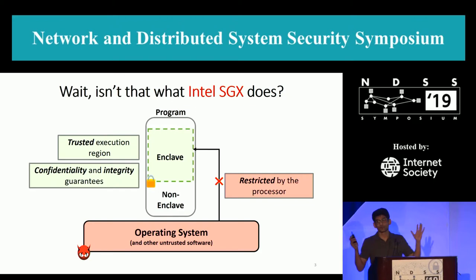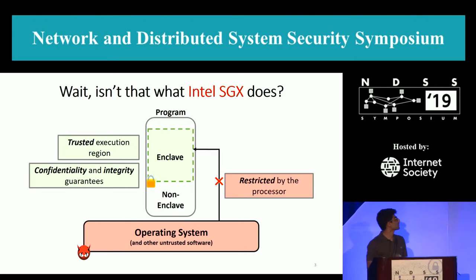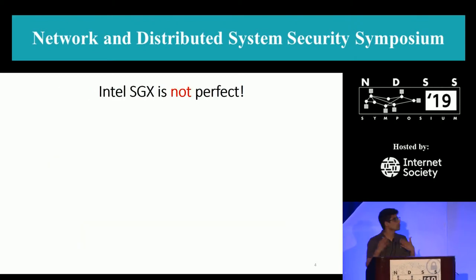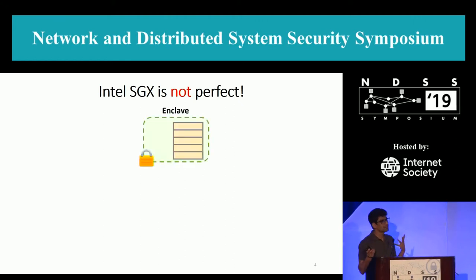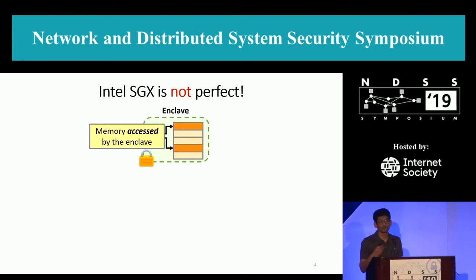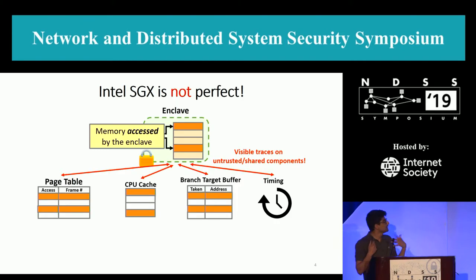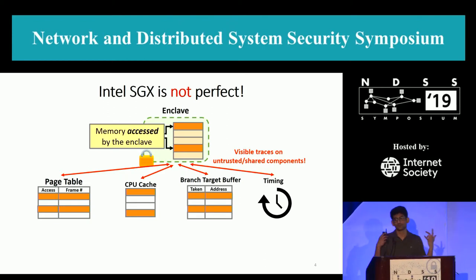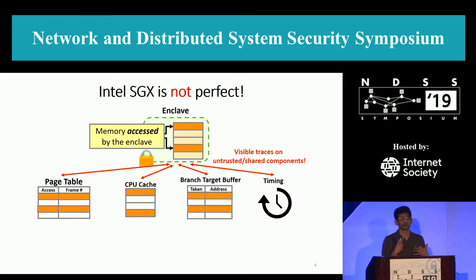In a perfect world, this is exactly what program obfuscation should be. But we don't live in a perfect world. Intel SGX is not perfect — there are a lot of papers showing that SGX leaks a lot of side channel information. Whenever the program performs memory access onto the enclave, it leaves visible traces on the untrusted and shared components: the page tables controlled by the operating system, the CPU cache, the branch target buffer or branch predictor units, and timing information.